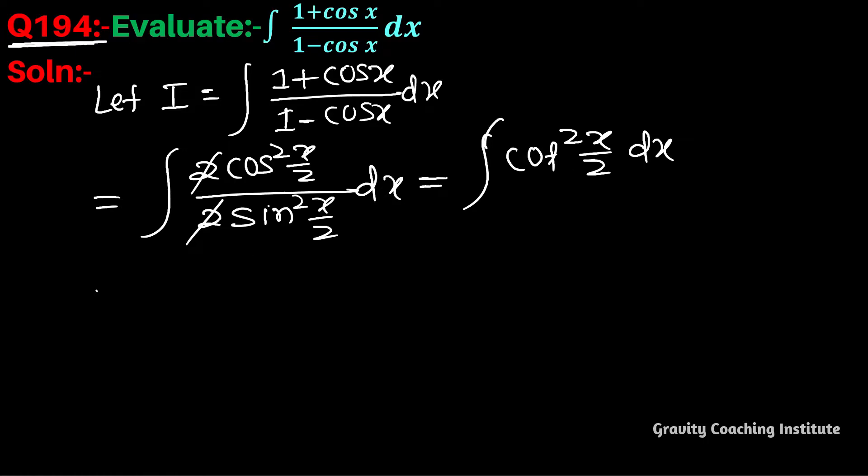There's no direct formula for cot, so we'll convert cot to cosec terms. This becomes cosec²(x/2) - 1, and then we can directly integrate.